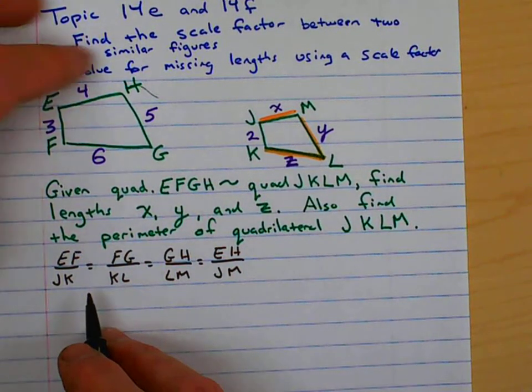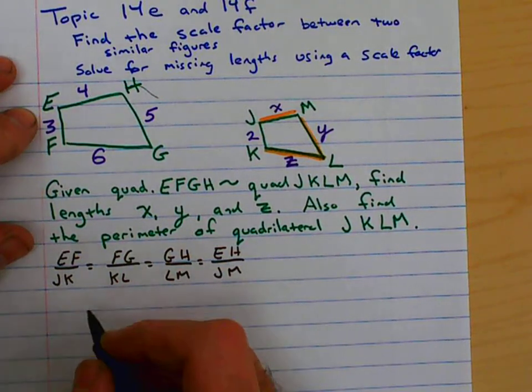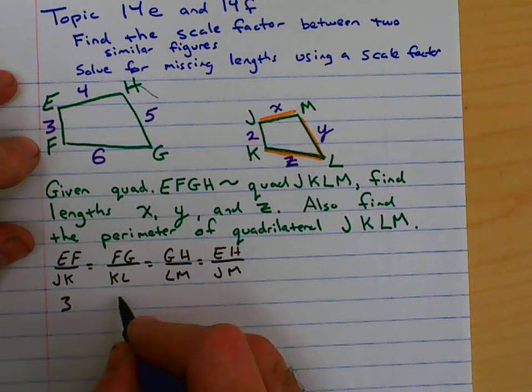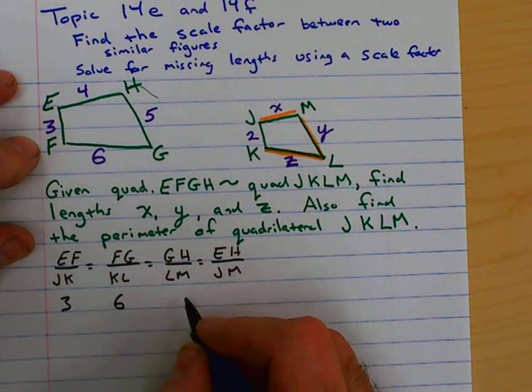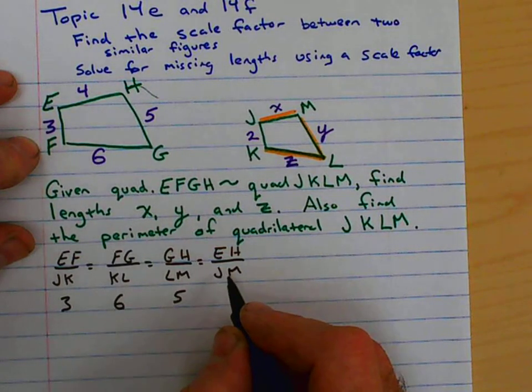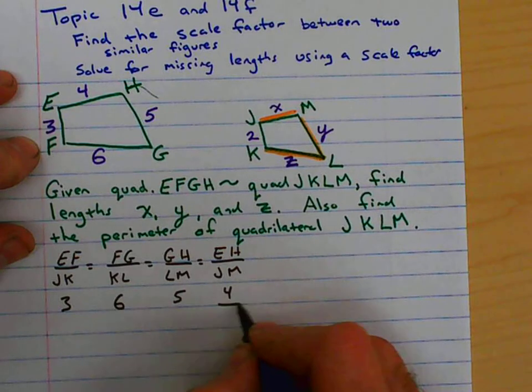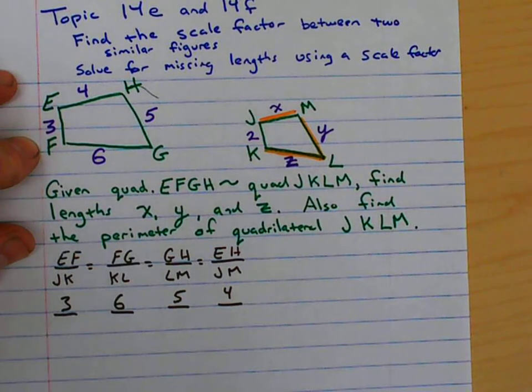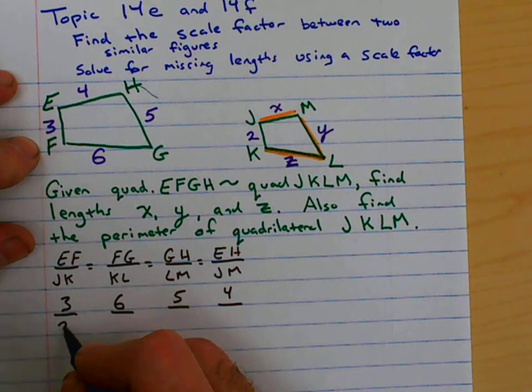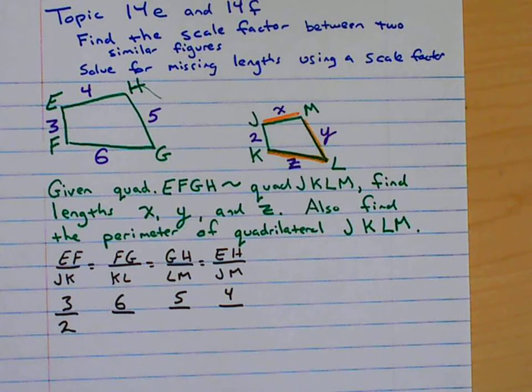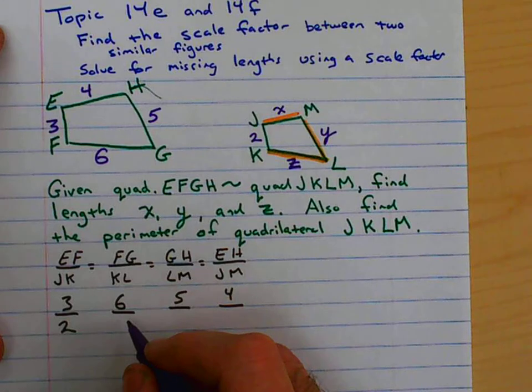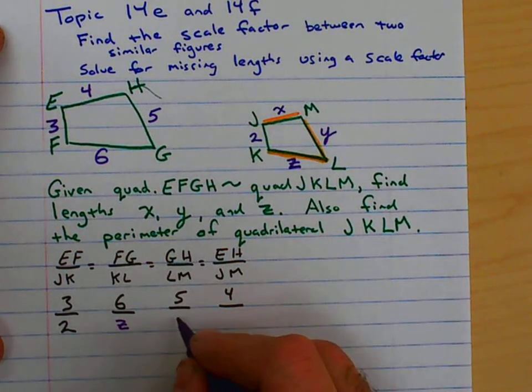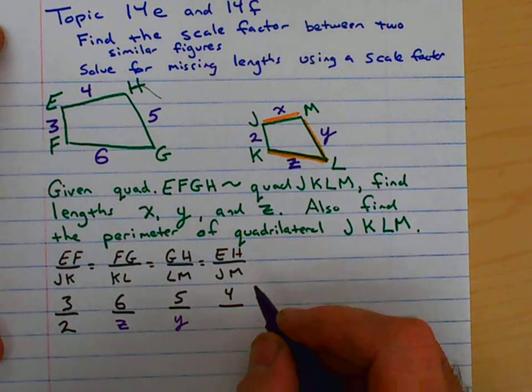We know all the lengths on the top. EF to be 3, FG to be 6, GH to be 5, and EH to be 4. And we know JK to be 2. And we're going to be looking for the KL, which is z, LM, which is y, and JM, which is x.